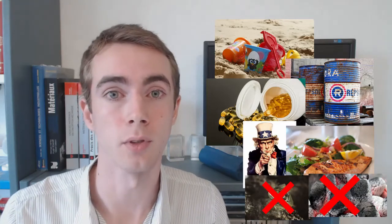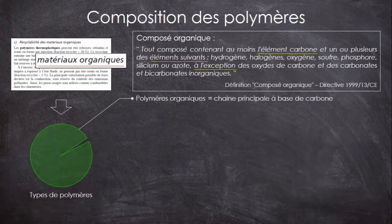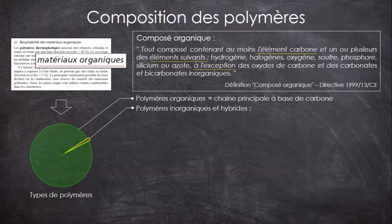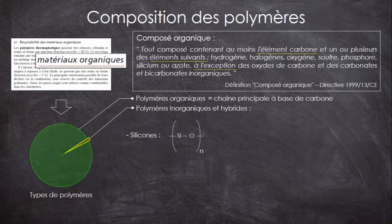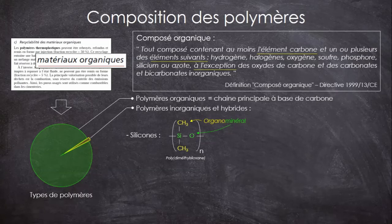Dans le cas précis des polymères, on considérera qu'il est organique si la chaîne principale est faite à base de carbone, qu'importe les groupes secondaires. Mais tous les polymères ne sont pas organiques : il existe quelques exceptions. La première, c'est celle des silicones. Ce sont des polymères hybrides, c'est-à-dire à la fois organiques et inorganiques, dont les chaînes ne sont pas faites de carbone, mais de silicium et d'oxygène. Par contre, leurs groupes secondaires sont généralement des composés organiques. On les appelle donc des organominérales, puisque inorganiques et minérales sont synonymes. Mais si les groupements ne contiennent pas de carbone, la silicone correspondante sera simplement inorganique.